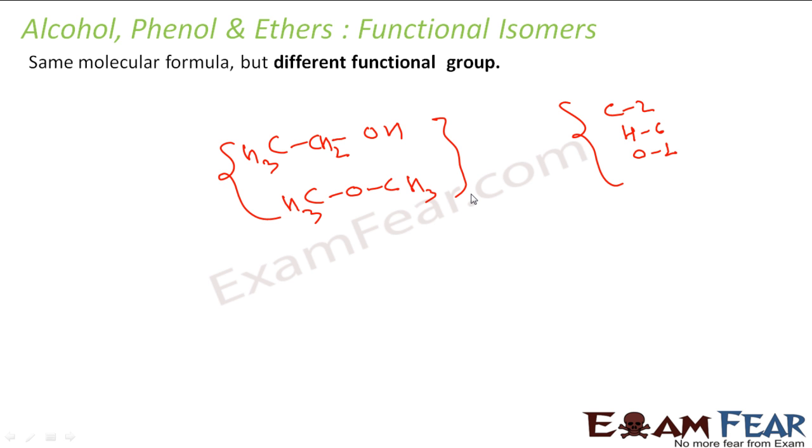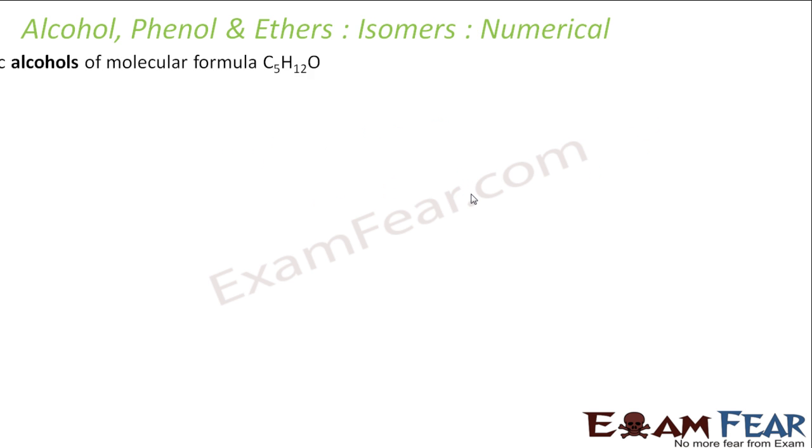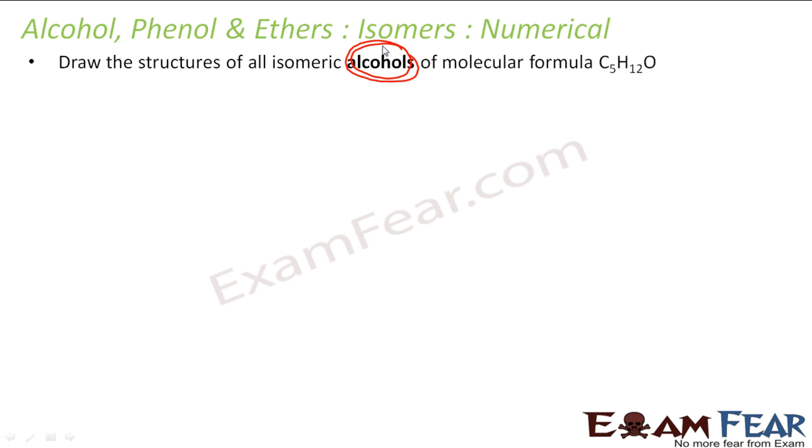So here if you see, the alcohols, phenols, and ethers show functional isomers, chain isomers, and position isomers. We will take some numericals on this and have to draw all the structures of all isomeric alcohols. Please note, only alcohols you have to draw for this formula. That means from this we can get ethers, aldehydes, ketones - you don't have to draw that, only alcohols.